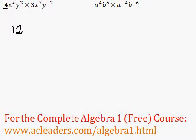Now x to the 4 times x to the 7, because we're multiplying them, we're going to add the exponents. 4 plus 7, 11.